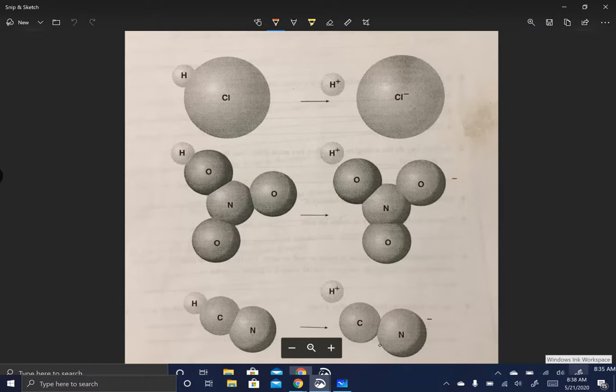You have HCl, H plus Cl minus. HNO3, H plus NO3 minus. You have HCN, H plus CN minus. So again, these three ions mean it's the same ion, but these three acids are all called acids because they release H pluses.